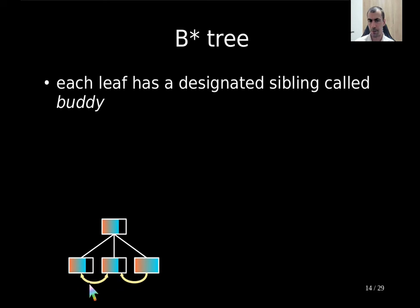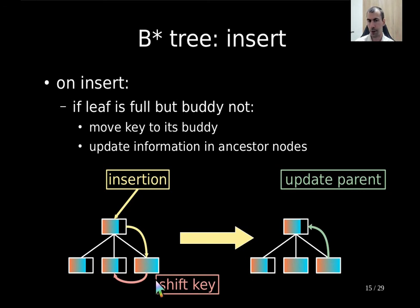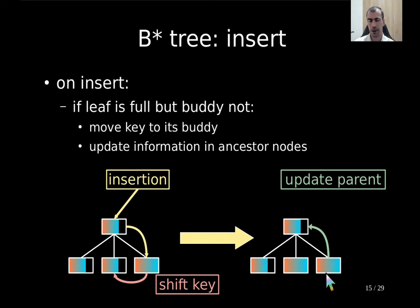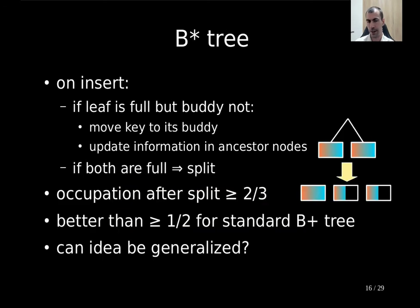In this example, two nodes are bodies and the right node is a body of the middle node. When an insertion happens for a full leaf, the full leaf checks if its body is also full. If the body is not full, it shifts a key to its body — in this case the succeeding leaf shifts its smallest key to the left leaf. Because the contents changed, we update the comparator in the parent. If also the body is full, then we do the split. Because we have the guarantee that at the split we always have two full leaves, the occupation rate after a split is at least two thirds — better than one half for the standard B-plus tree.